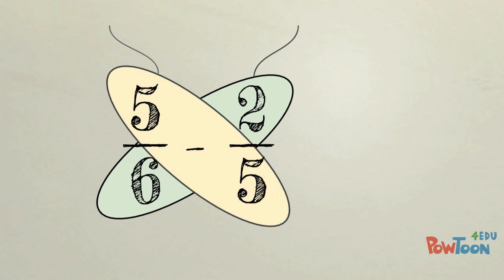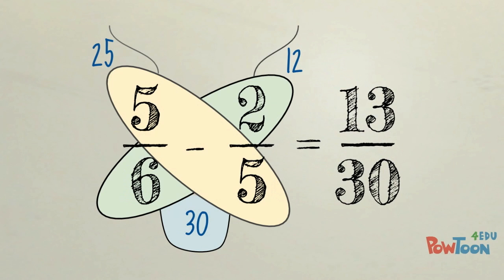We're going to multiply 5 times 5 to give us 25, and then we'll multiply 6 times 2 to give us 12. Those are our new numerators. We must then multiply the 6 times 5 to give us 30 as our new denominator. Simply subtract 25 minus 12 to give us 13 and keep 30 the same, so our answer is 13 thirtieths.